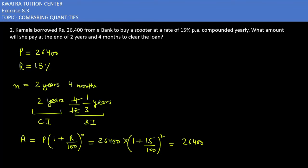So 26,400 into 15 and 100 reduce by table of 5, 3 is 20. So 1 plus 3 by 20 square. Now 26,400 is 26,400. The bracket is 23 over 20, and square means 2 times.